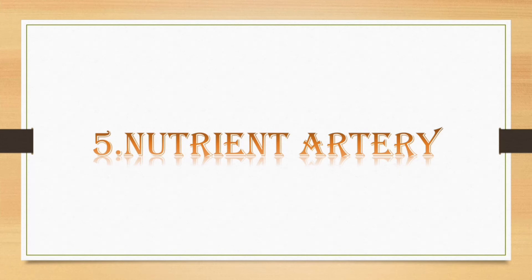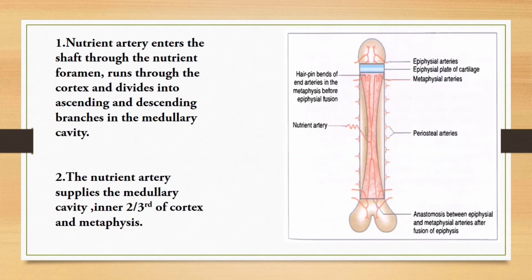Fifth question is the nutrient artery. You can also draw the diagram given in B.D. Chauratia General Anatomy Figure 2.15, the microscopic structure of compact bone. The nutrient artery enters the shaft through the nutrient foramen, runs through the cortex, and divides into ascending and descending branches in the medullary cavity. The nutrient artery supplies the metaphysis, medullary cavity, and inner two-thirds of the cortex. Please draw this diagram and mark the nutrient artery and its branches.